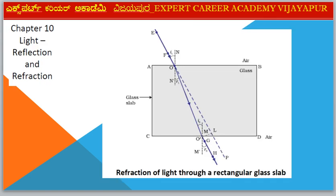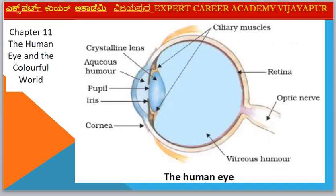Next diagram — Chapter 10: Light — Reflection and Refraction. Diagram: Refraction of Light through a Rectangular Glass Slab.